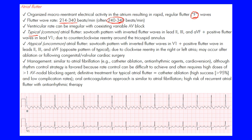That 240–340 bpm range is the typical flutter rate you'll want to recognize. On the ECG, flutter waves are often about one large box apart, which gives us 300 divided by 1 = 300 beats per minute as a rate estimate. Notice that the flutter waves occur at regular intervals — there's actually one buried within the QRS complex, but the rhythm continues regularly.